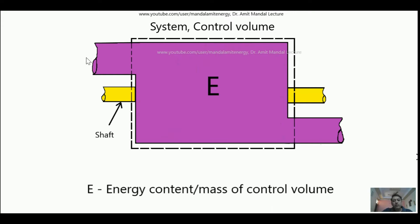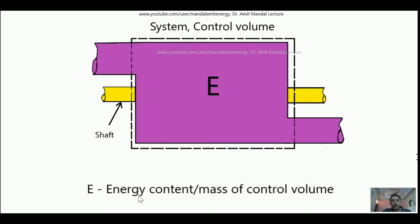Suppose that this is a system and this is the control volume, shown by the dashed line. From one end, as I am showing with the cursor, a fluid can go in, and from the other end the same fluid can come out. Capital E represents the energy contained per unit mass of this control volume. For example, if the control volume has total energy of 100 joules and mass of 10 kg, then E equals 10 joules per kg.